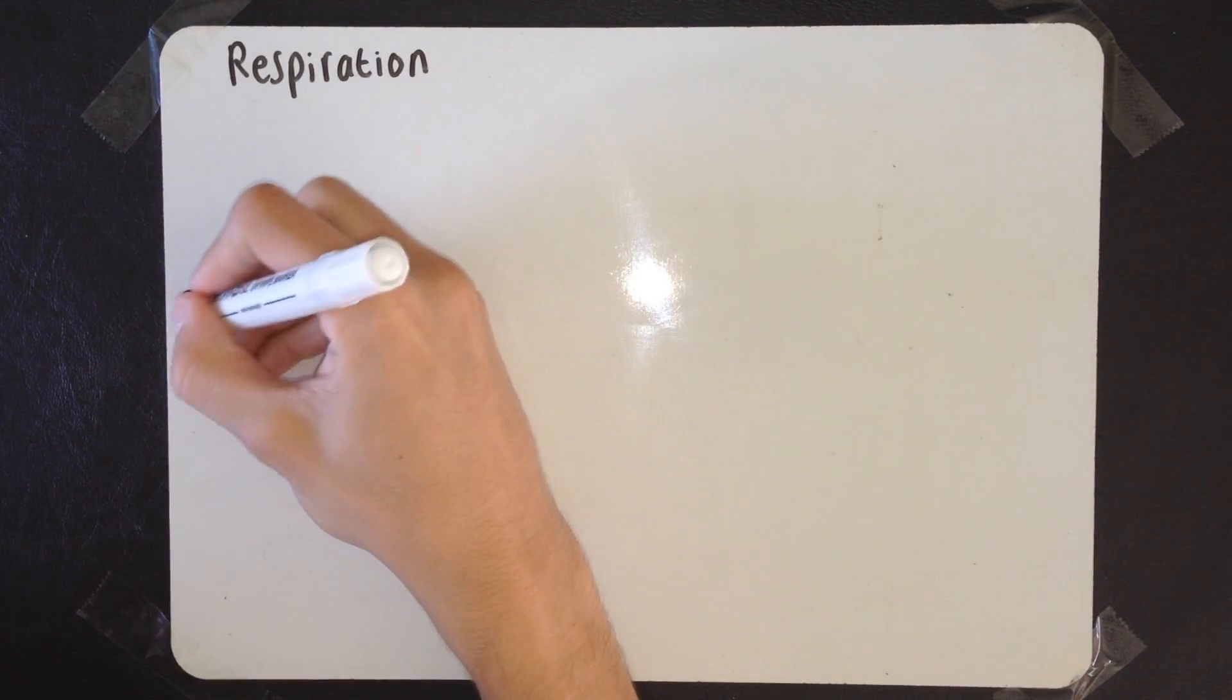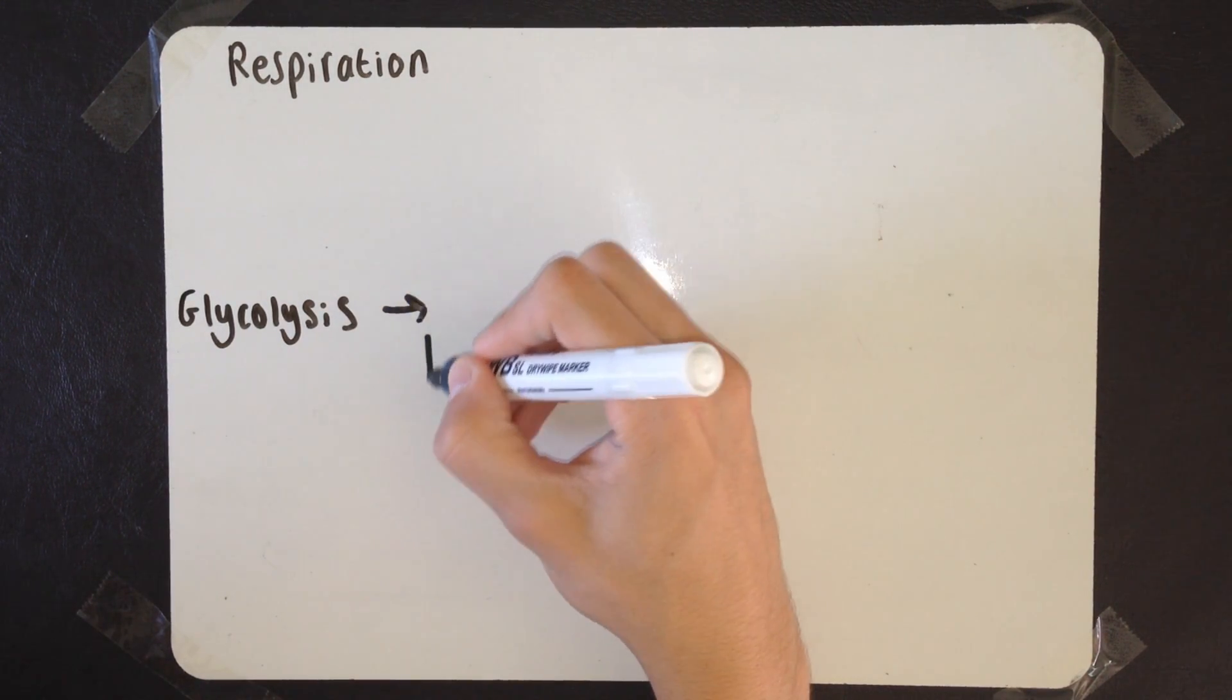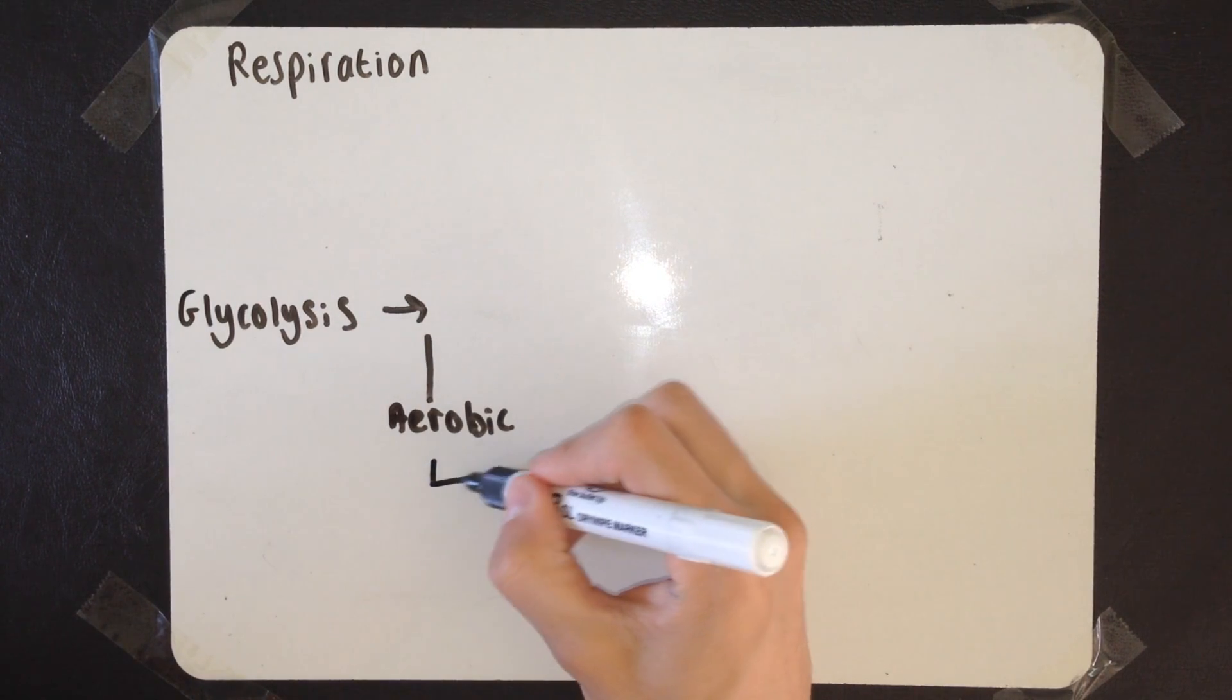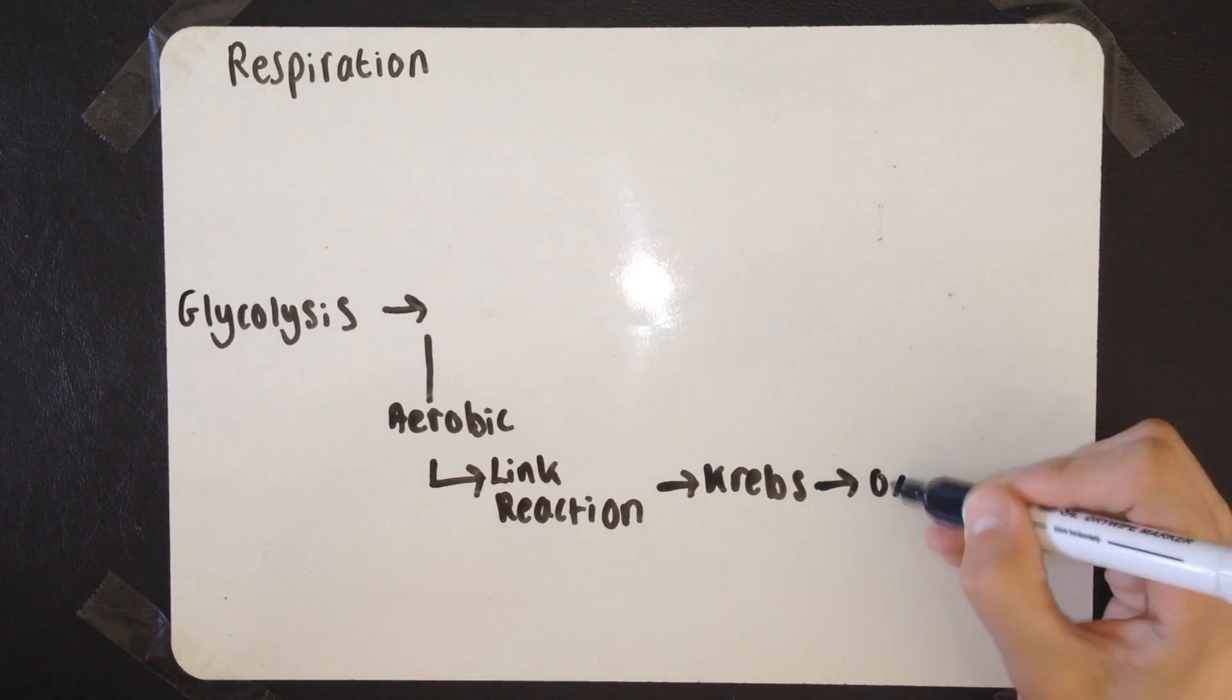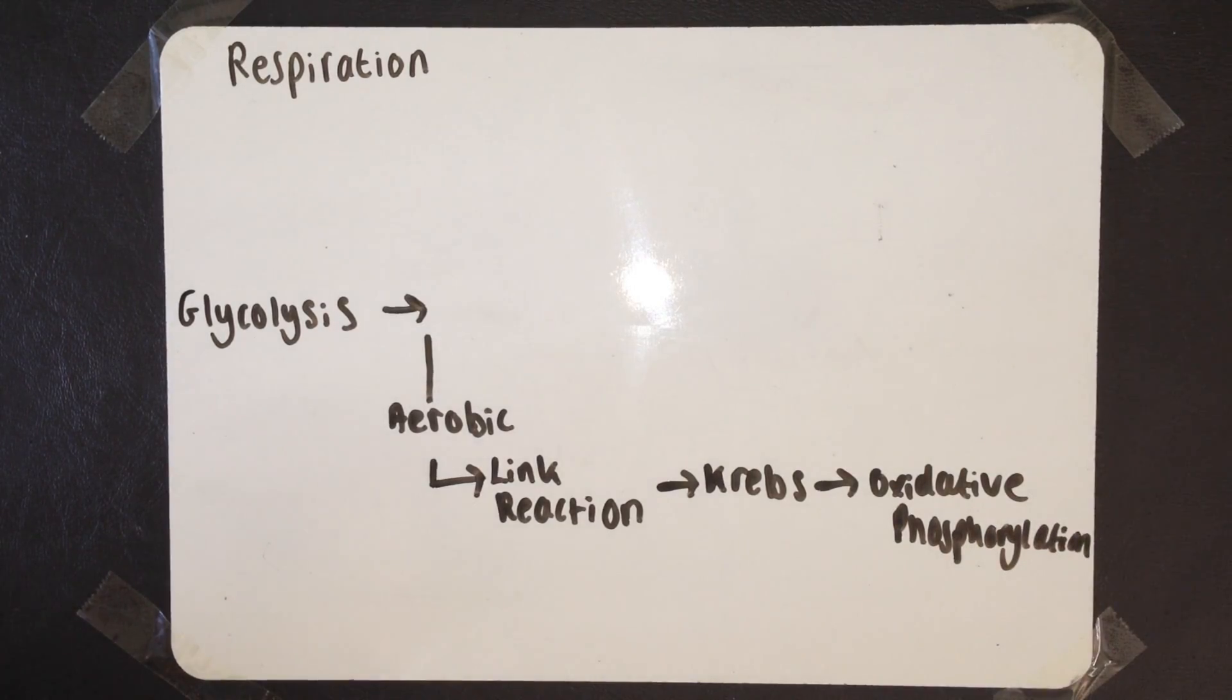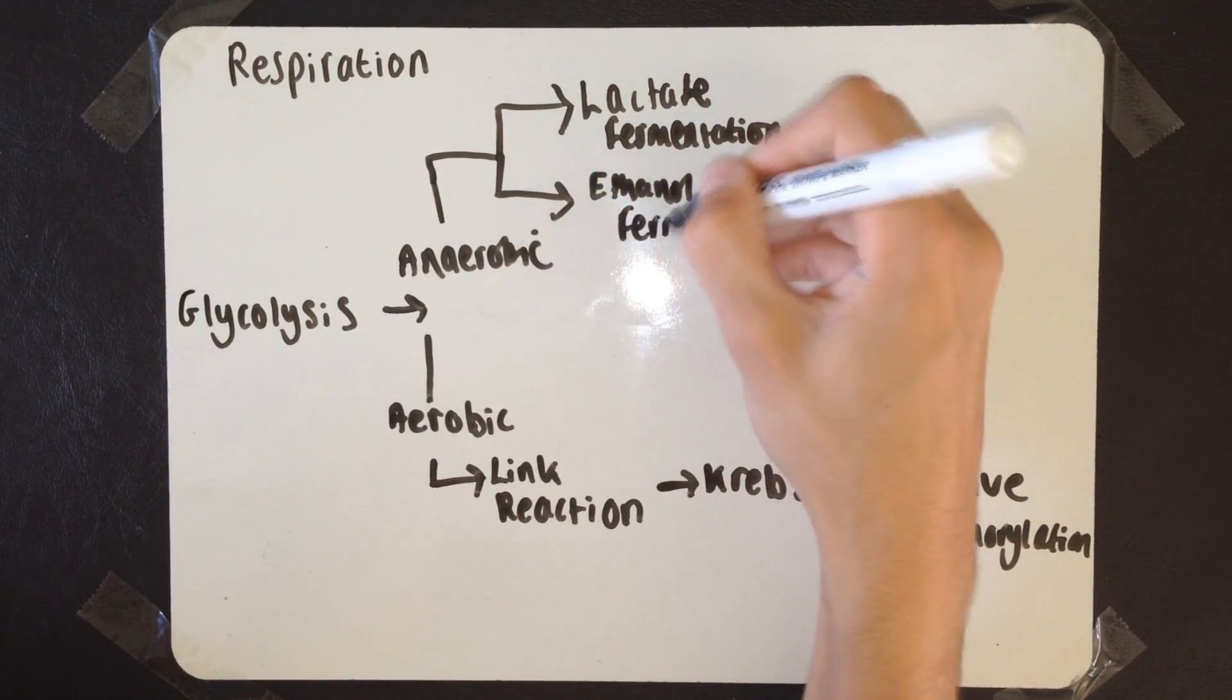I'm going to quickly talk you through the pathways of respiration. In this video, we'll be covering aerobic respiration. Respiration starts with glycolysis, and then you can differentiate whether you're going to go anaerobic or aerobic. The aerobic pathway starts with the link reaction, the Krebs cycle, chemiosmosis, and oxidative phosphorylation, but we'll come to these in detail very soon. The anaerobic pathway is the lactate fermentation and ethanol fermentation, but I'll come to these in a later video.